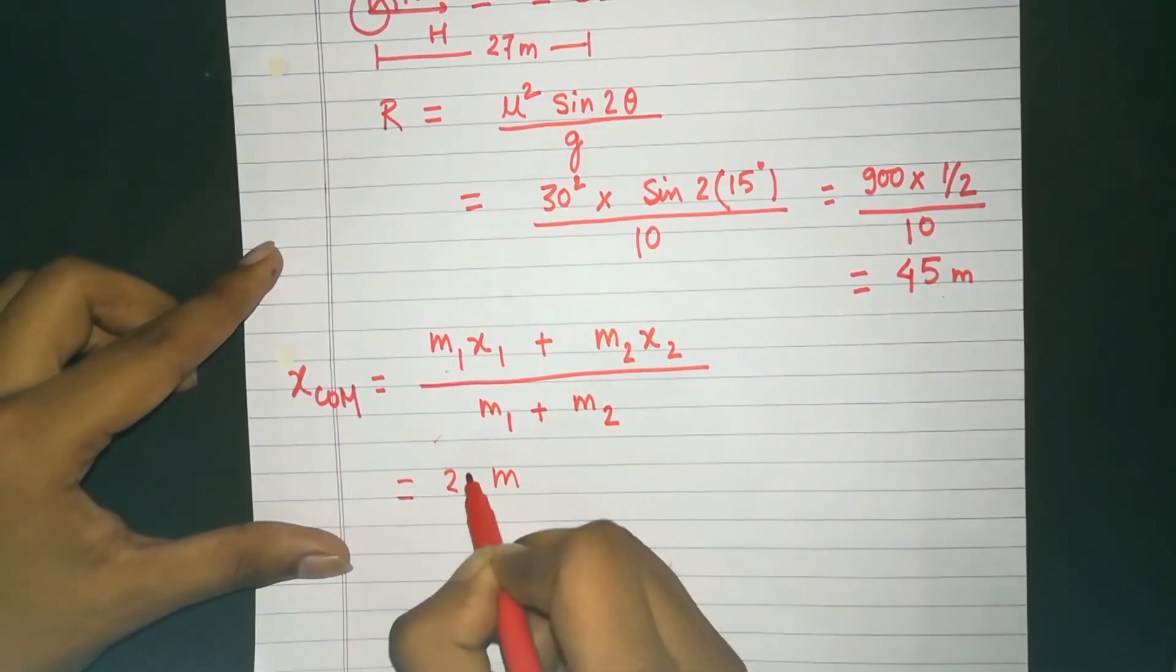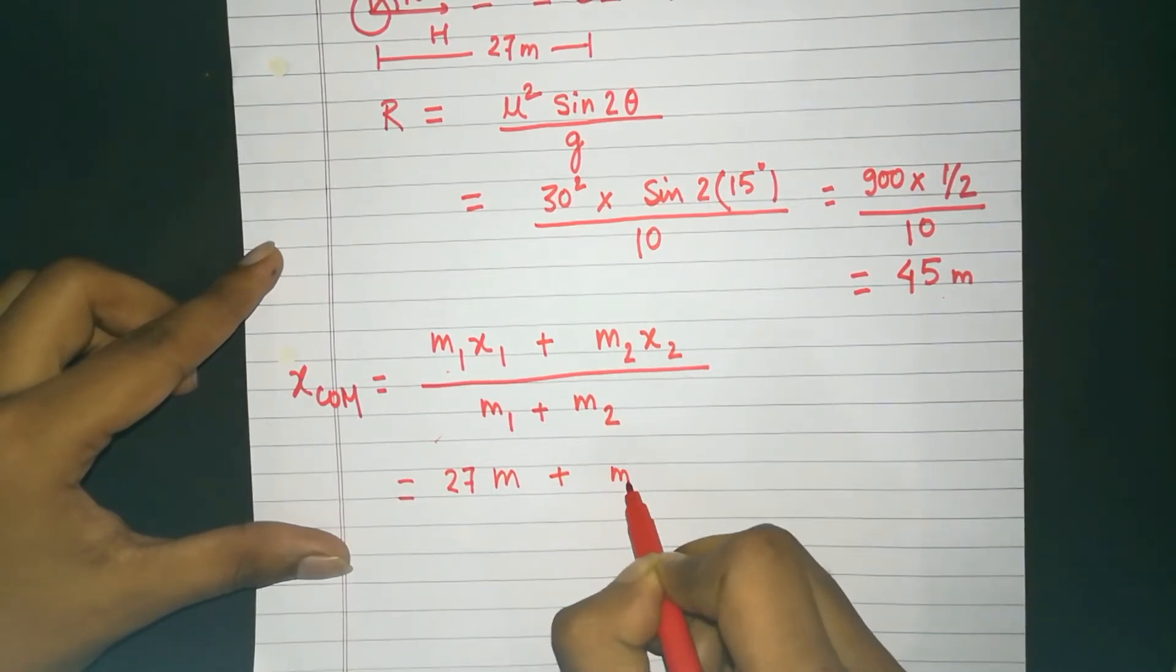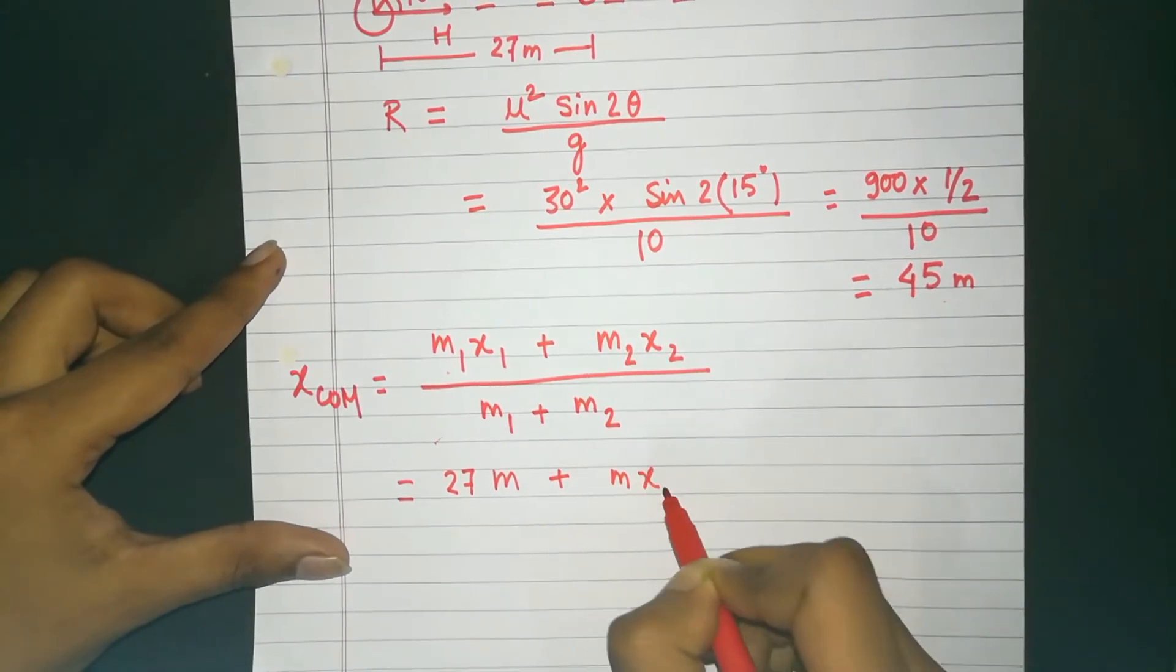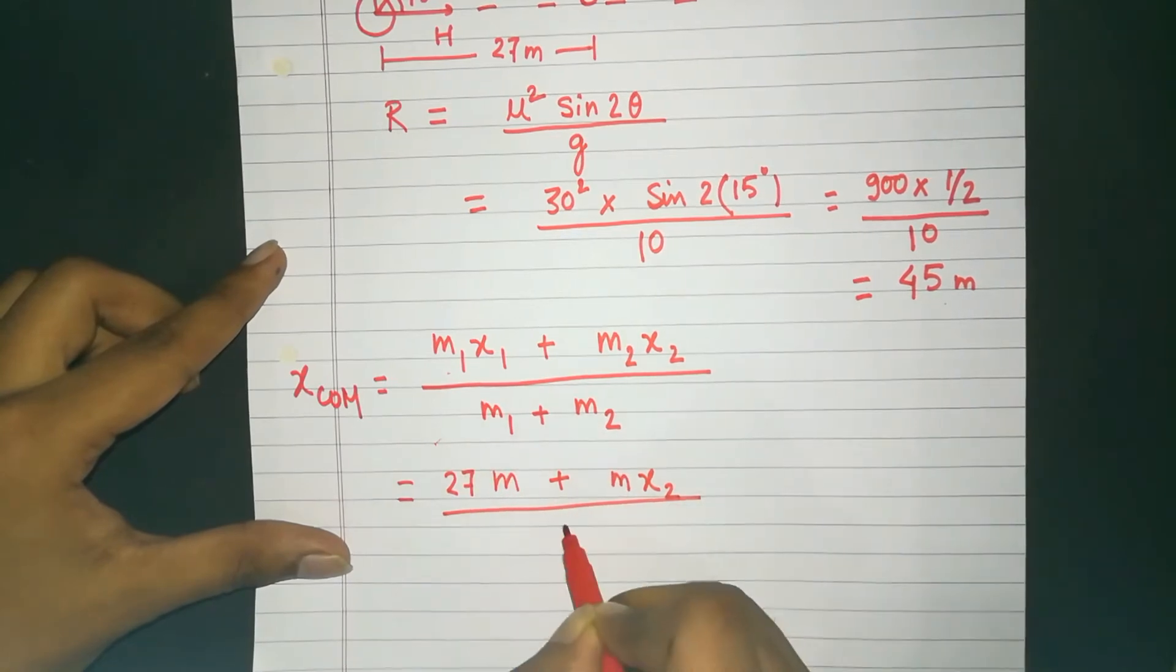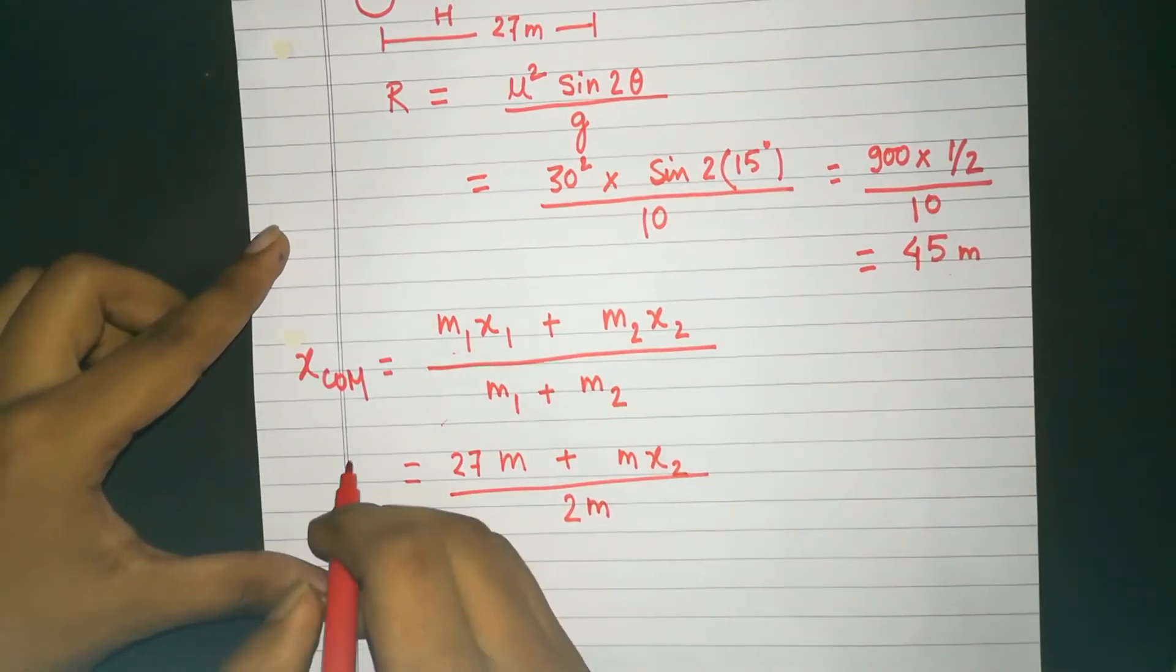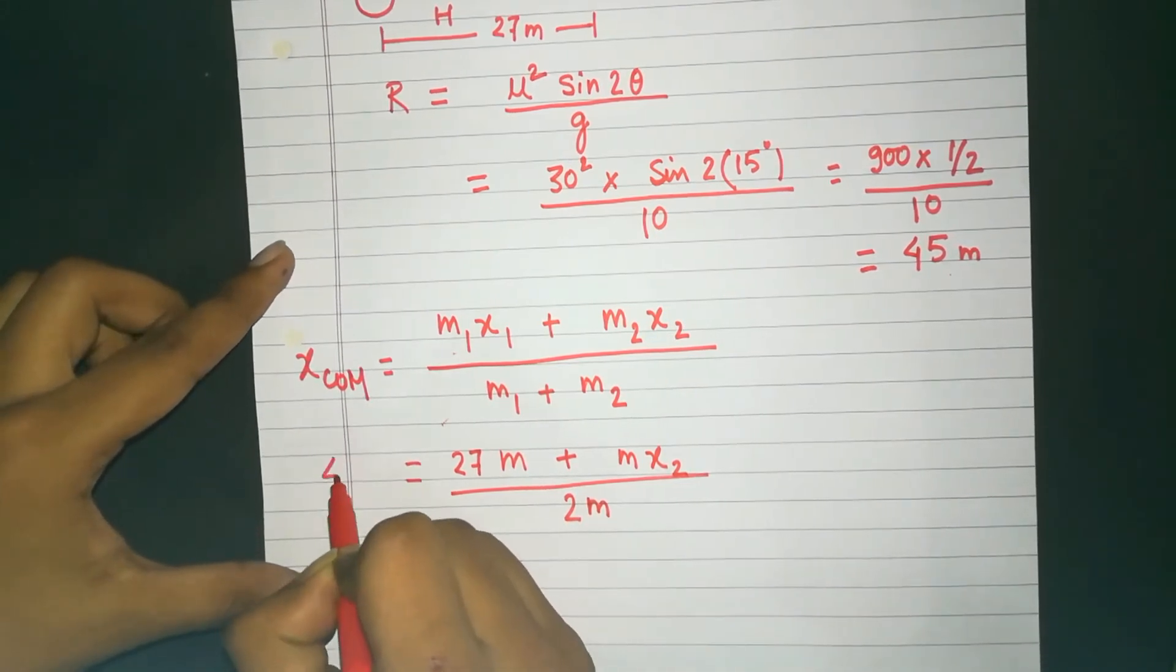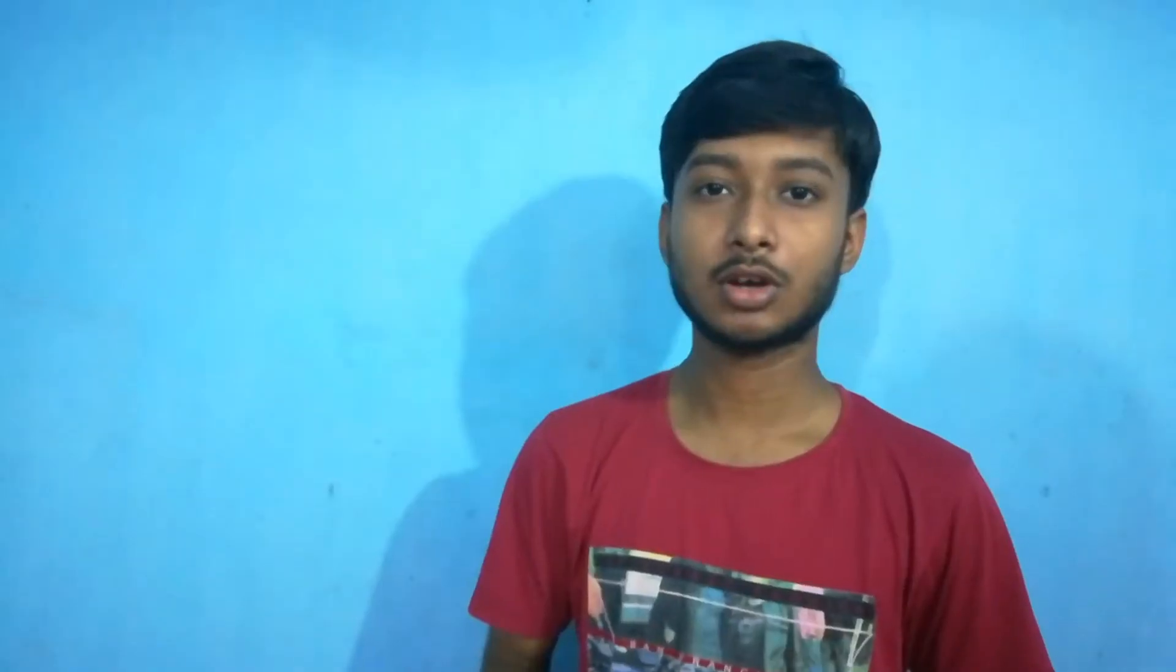So it is 27M plus another M, but x2, that is our unknown and we have to find that. So it is 27M plus Mx2 divided by M1 plus M2, that is 2M, equals the position of center of mass. That is 45 meters. That was our range.